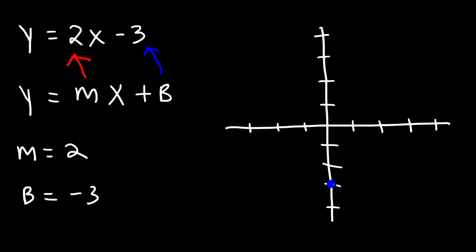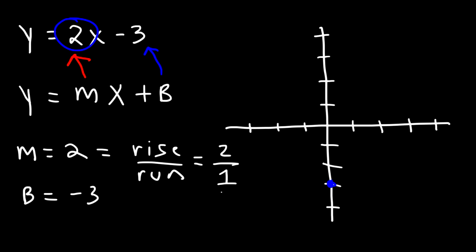Once you have the y-intercept, the next thing you want to do is use the slope to get the next point. The slope is basically the rise over the run. A slope of 2 means we're going to travel up 2 units for every 1 unit we travel to the right. So let's go up 2 and then over 1, giving us the next point, which is (1, negative 1).